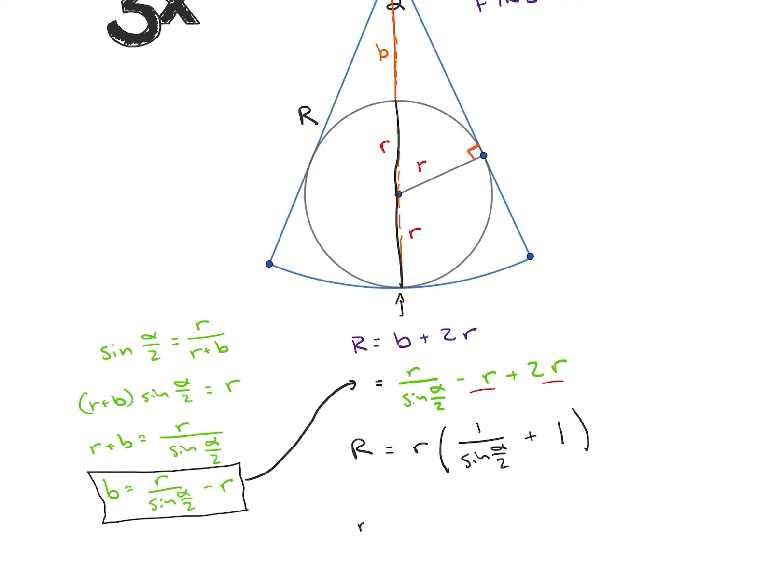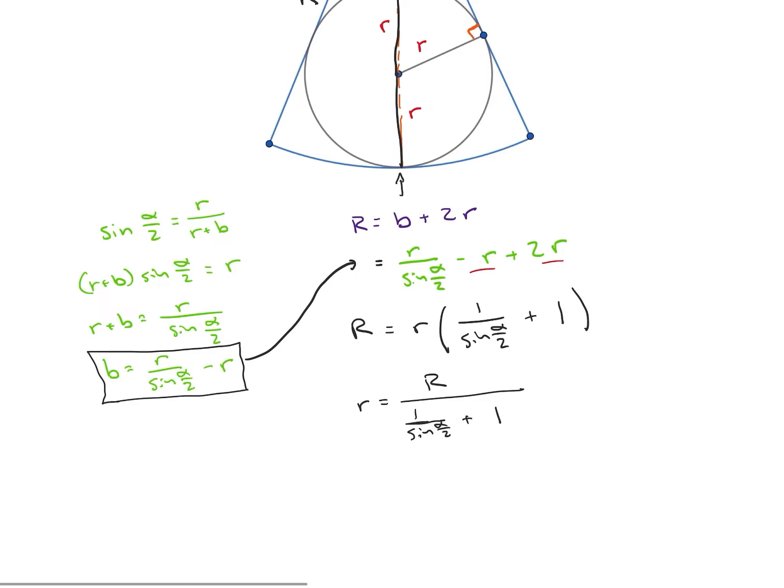Okay, so now I can solve for r and r is going to be equal to big R divided by 1 over sine of alpha over 2 plus 1 which I can rewrite and my final solution here is going to be the radius is equal to R divided by 1 plus cosecant of alpha over 2. And that's our solution.